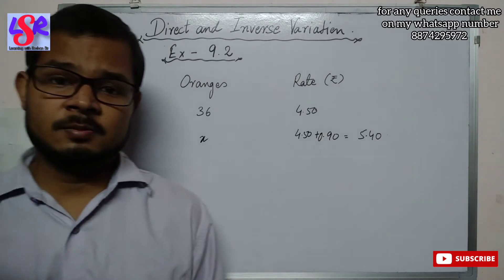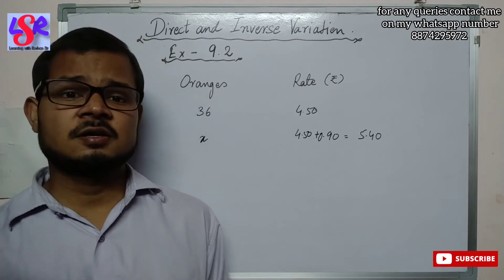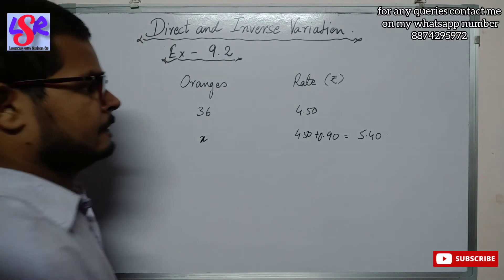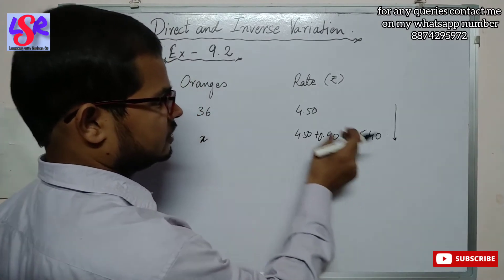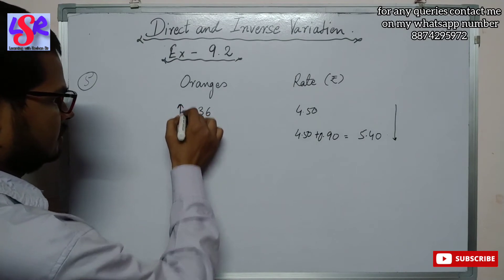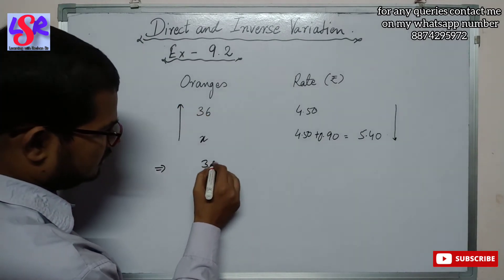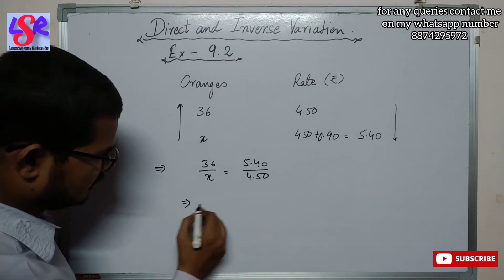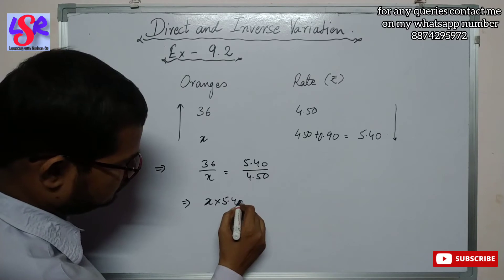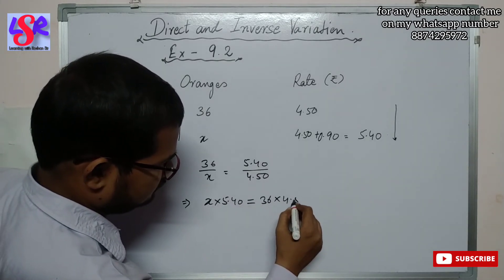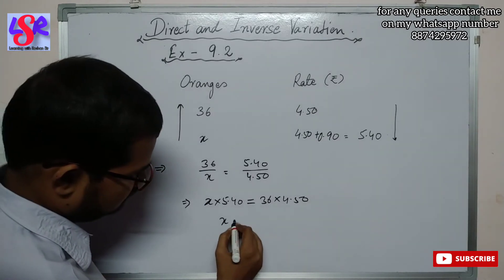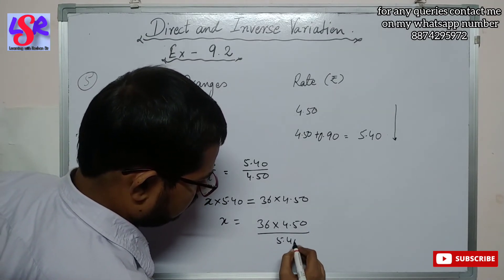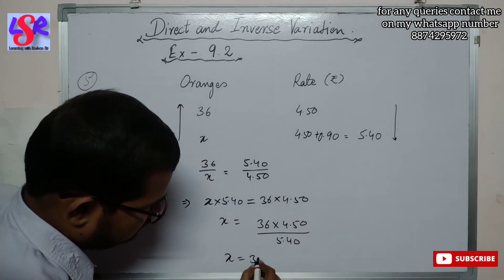When we have a limited amount of money and the rate of the object increases, the number of objects we can purchase will be reduced, so it is a case of inverse variation. Since 5.40 is greater than 4.50, we set up the equation: 36 upon x equals 5.40 upon 4.50. After cross multiplication, x equals 36 into 4.50 upon 5.40, which gives x equals 30 oranges.